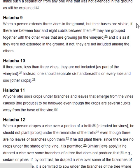Halakha 9. When a person extends three vines in the ground but their bases are visible, if there are between four and eight cubits between them, they are grouped together with the other vines that are growing in the vineyard, and it is as if they were not extended in the ground. If not, they are not included among the others. If there were less than three vines, they are not included as part of the vineyard. Instead, one should separate six handbreadths on every side and sow other crops.